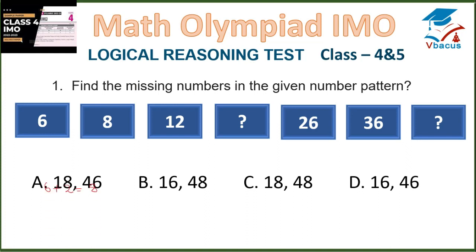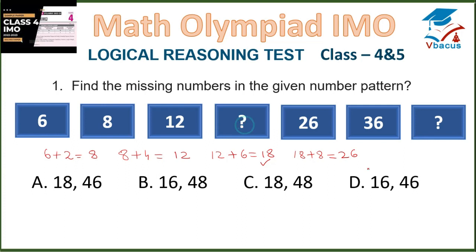We can see if we add 2 to 6 it will become 8. If we add 4 to 8 it will become 12. So here we have added 2, here we have added 4. Now we add 6, so 18 will come in this blank. Then we add 8, that is 26. And 10 is added to 26, it is 36. So we add 12 to 36, giving 48. So 18 and 48 are the answers, which is in option B. So option B is correct.